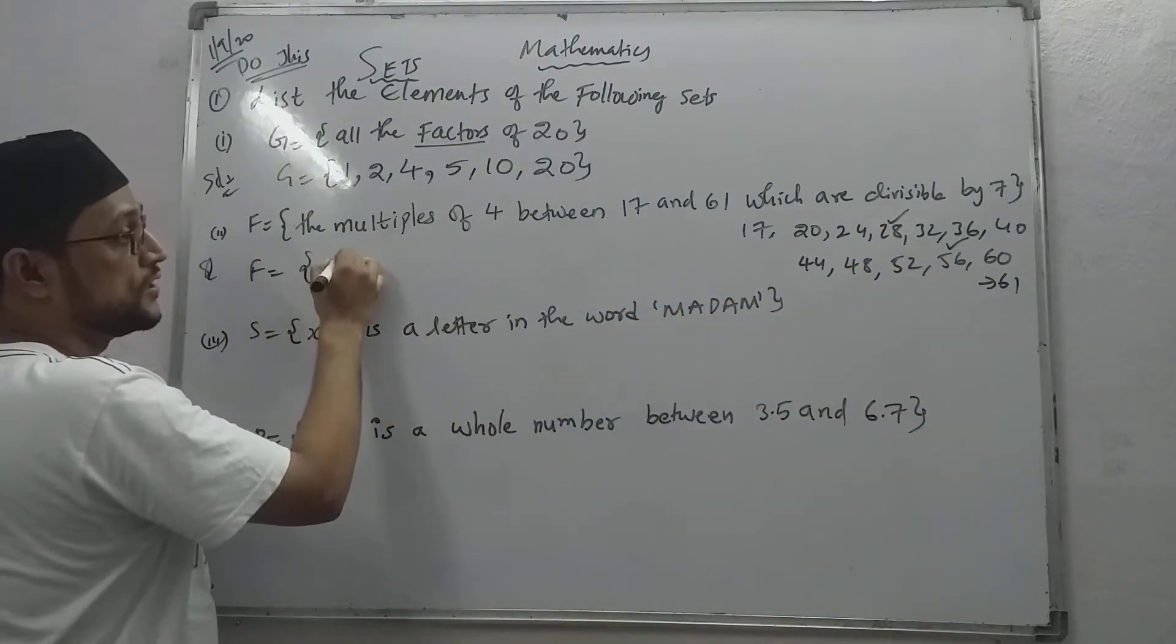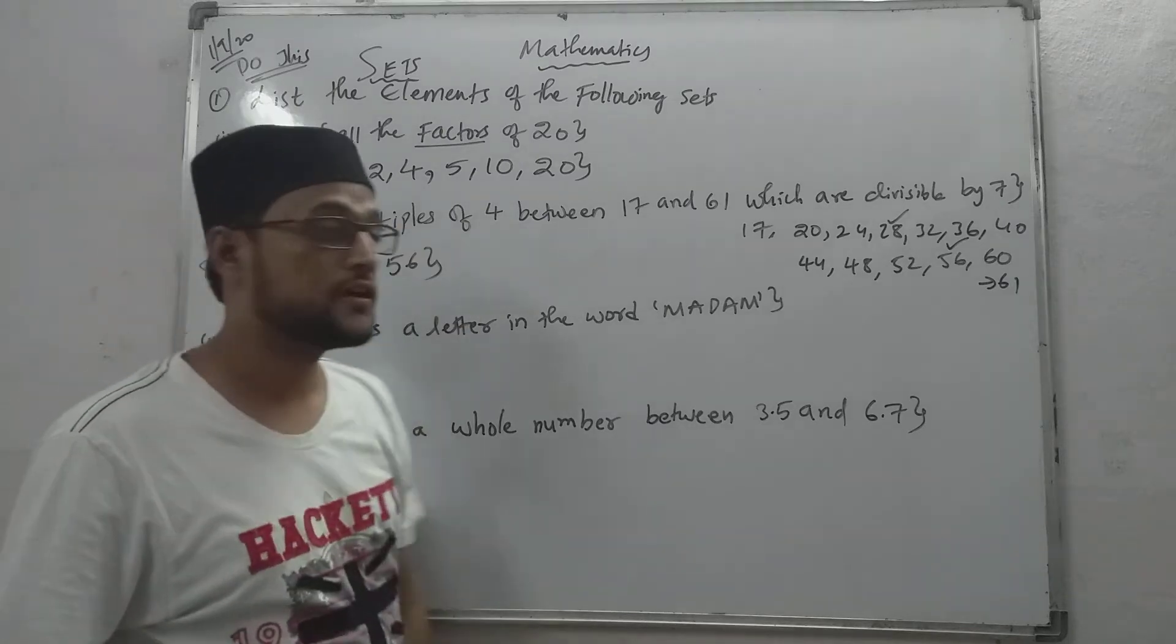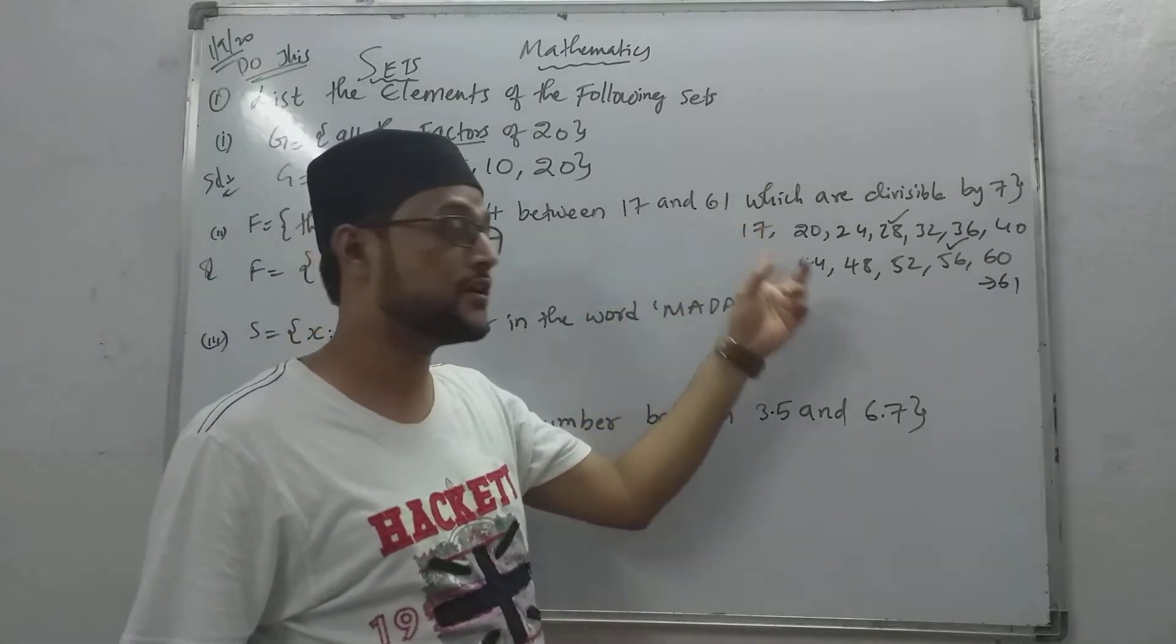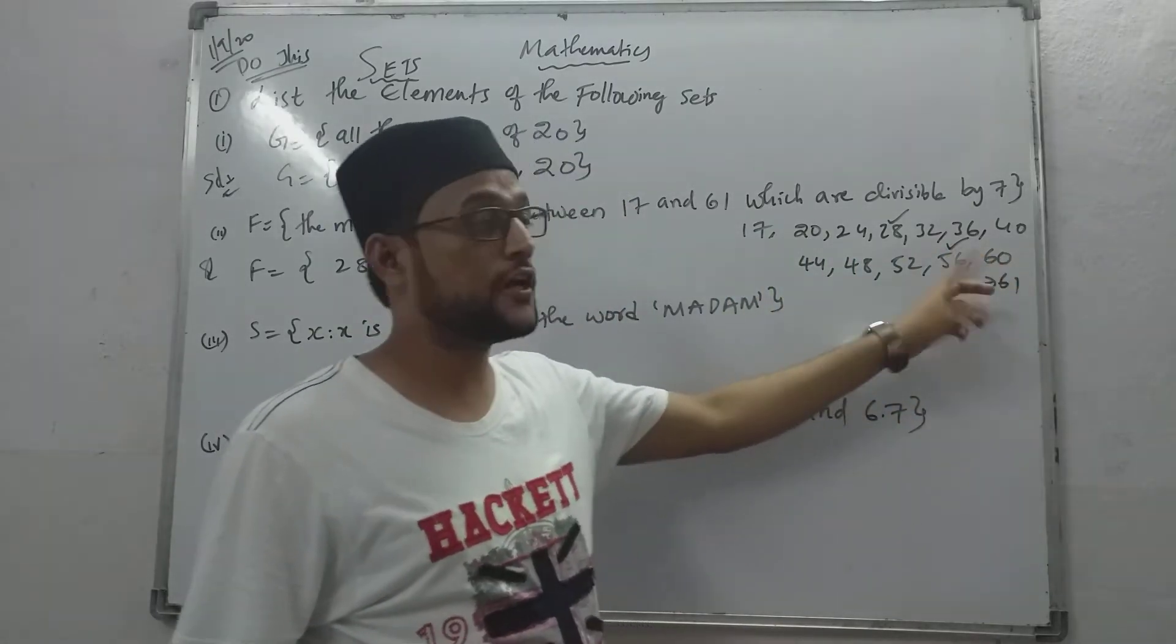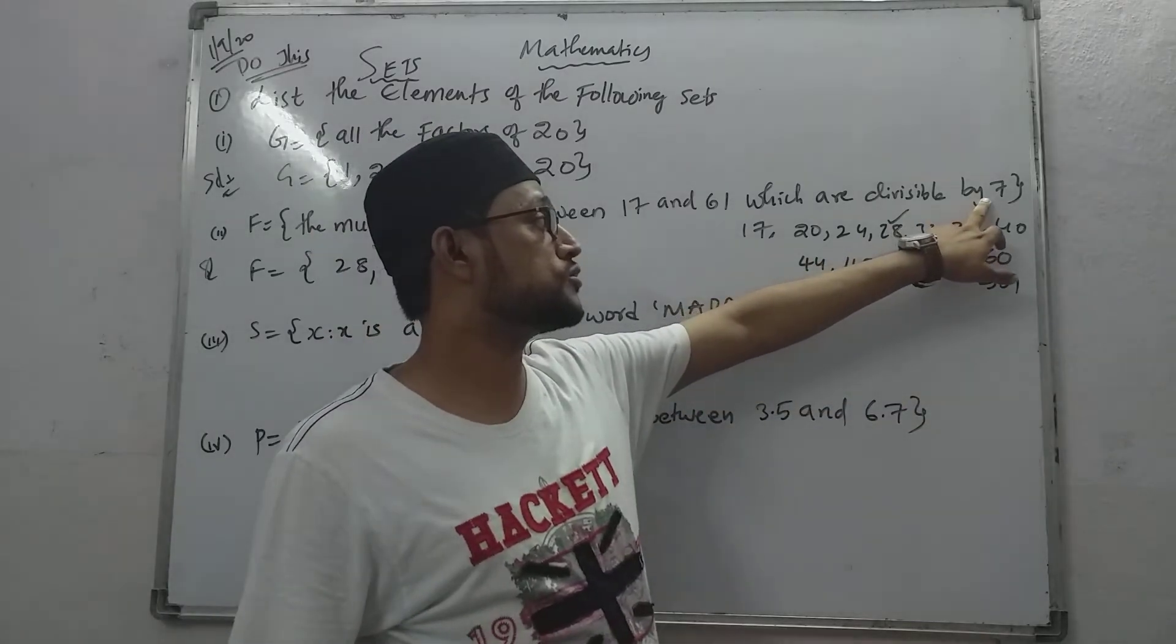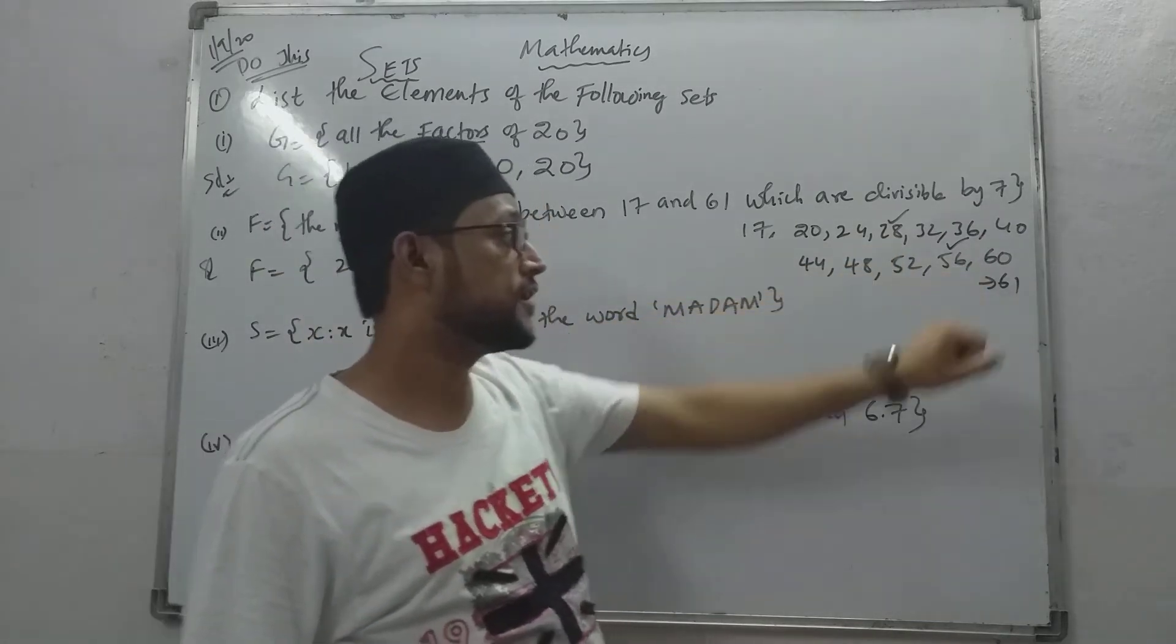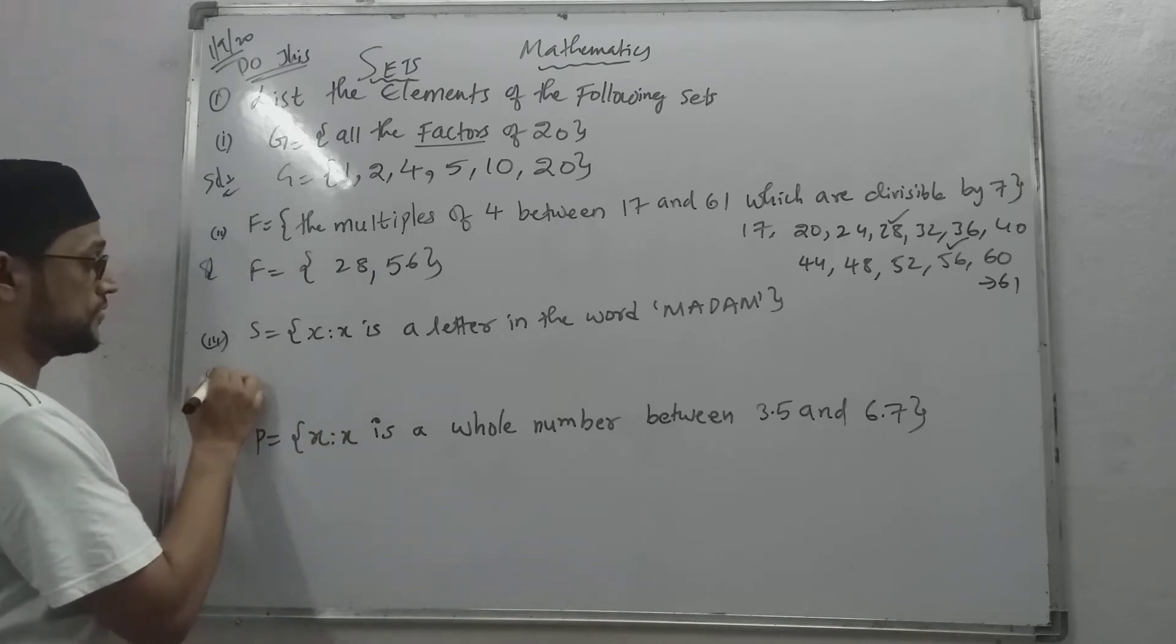So our answer is twenty-eight and fifty-six. Once again I am saying - we have to see the multiple of four in between seventeen and sixty-one. We got the numbers twenty till sixty. In between these numbers, we have to choose the number which is divisible by seven. Yes, correct? So seven fours are twenty-eight and seven eights are fifty-six. These are the numbers. Now our next one.